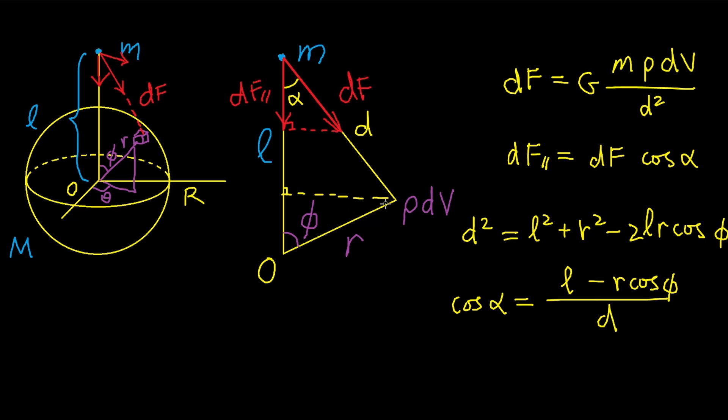To see this, we may draw a height in the triangle. So now we have two right triangles. This side is r cos φ. So this side in the upper right triangle is L - r cos φ. Divide by the hypotenuse d, we get the cosine of α.